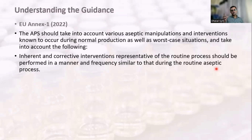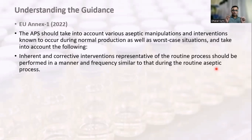Inherent interventions include stopper adjustment, removal of a fallen vial, vial adjustment, removal of a blockage, and addition of rubber stoppers — these are routine occurrences. Corrective interventions include sensor adjustment, which may also require engineering help. All of these should be performed in a manner and frequency similar to that seen during routine aseptic processing.